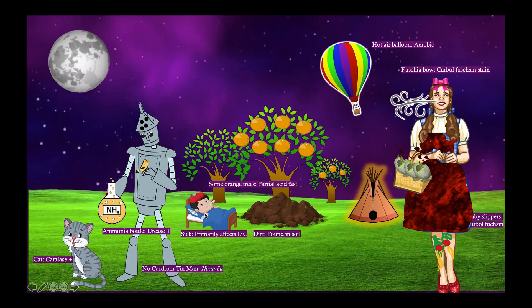Notice here that our Tin Man is taking care of this little sick kid. And the little sick kid is our recurring symbol for immunocompromised. Nocardia tends to affect immunocompromised people.